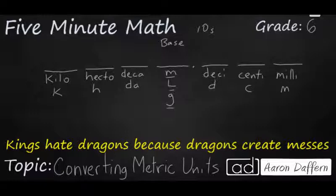Those are the three units we use in the metric system: meters for length, liters for volume, and grams for mass. If we think of the base as the ones place, then if we have 10 of our base unit, we call it DECA — prefix DECA, abbreviation DA — and that's the tens place.